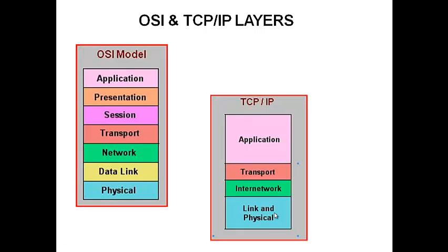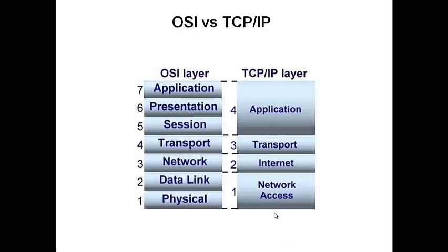Looking at the relationship between OSI and TCP/IP: layers 5, 6, and 7 are consolidated to the application layer. The physical and data link layers are now known as the network access layer — describing how you connect your device, whether by cable or Wi-Fi, essentially how you access the network.